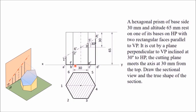Now, to get the true shape of this section — because the section is inclined, the top view you are getting is not the true shape. To get the true shape, you have to project the section onto an auxiliary inclined plane parallel to the section plane. That means draw one X1Y1 line parallel to the section plane, then project all points. I can see that there is one line, 1 to 4, which is parallel to the XY line. Therefore, instead of drawing the auxiliary inclined plane, I am directly drawing this line and will project all points around it.